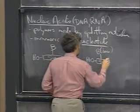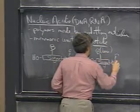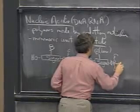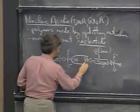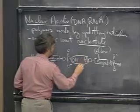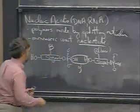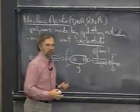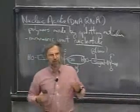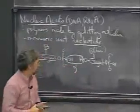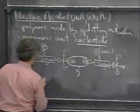B stands for base. The bond is formed by splitting out water to form what's known as a phosphodiester bond. We'll be talking a lot about those when we discuss DNA and RNA in more detail later in the course.